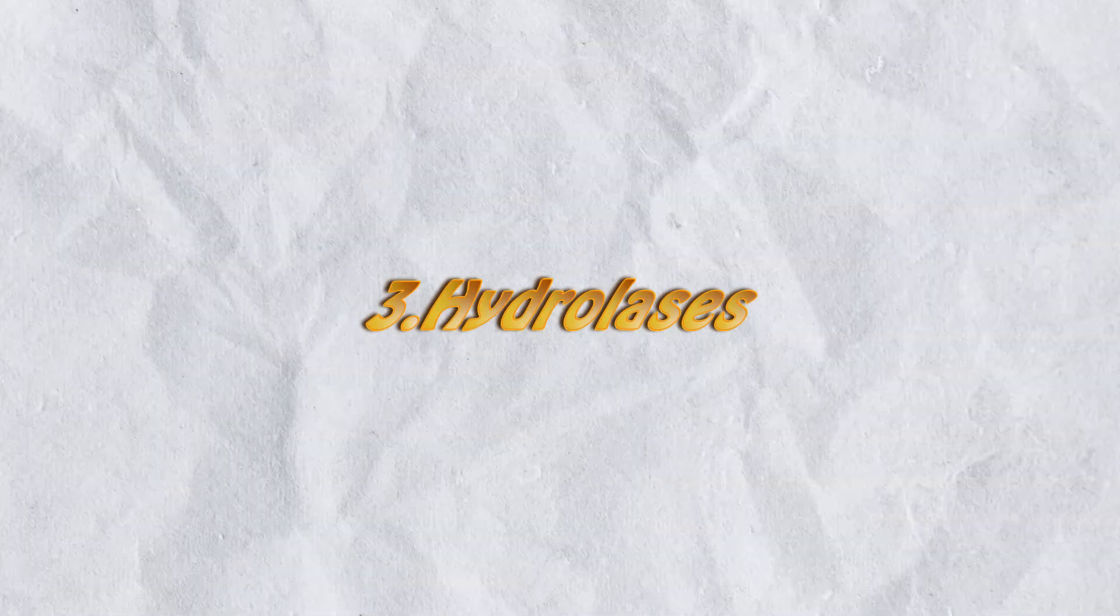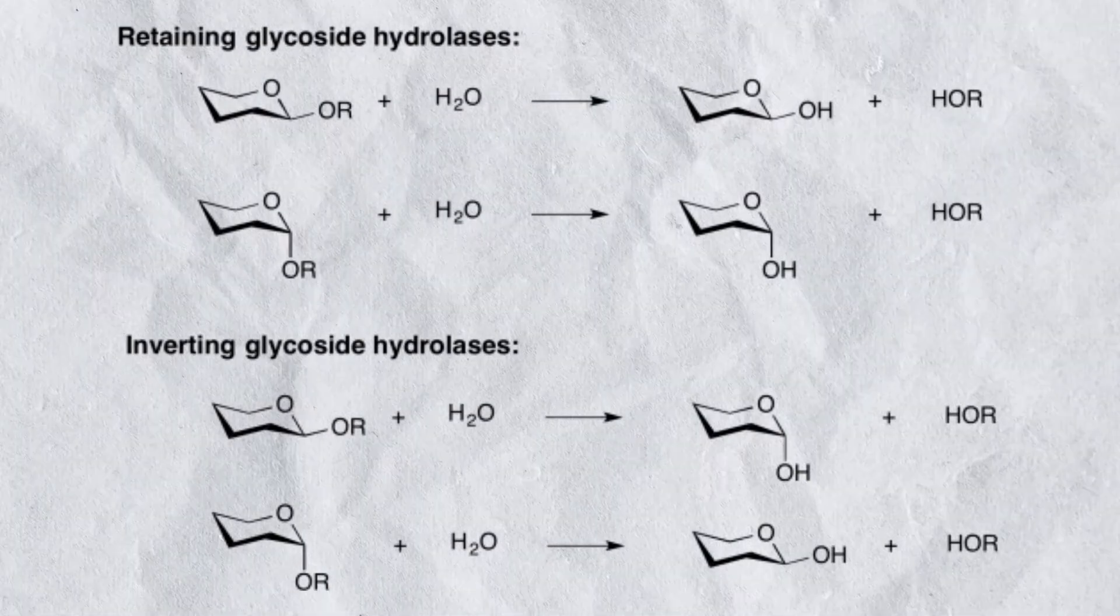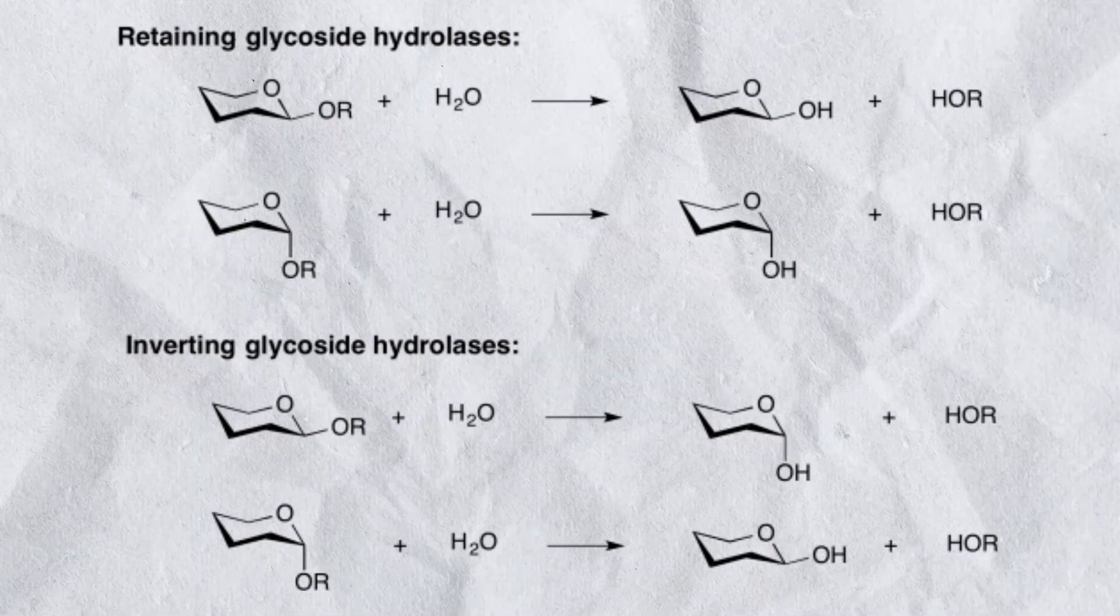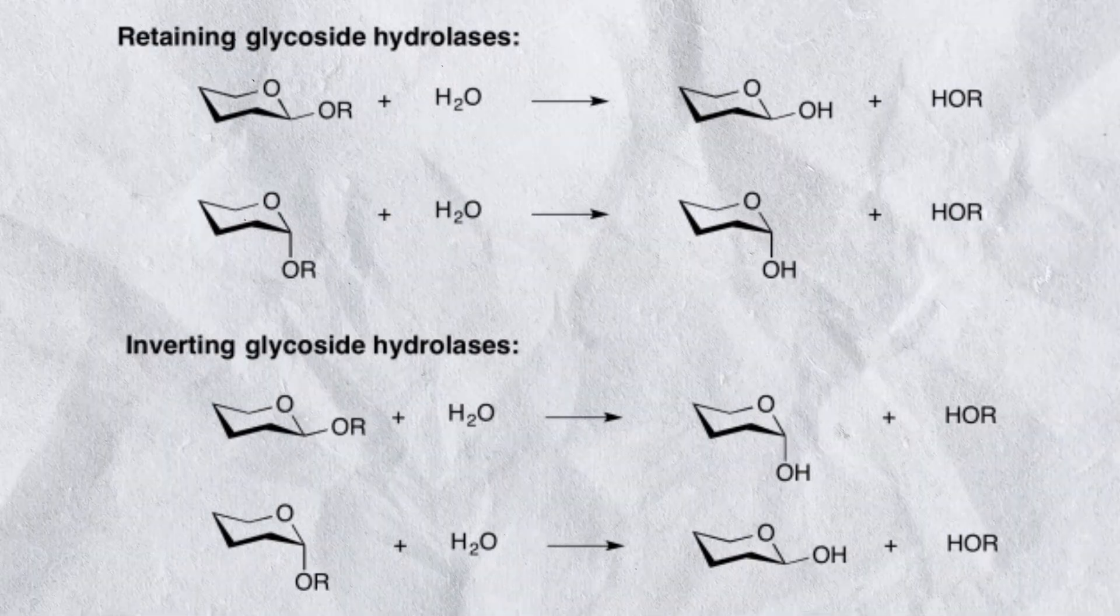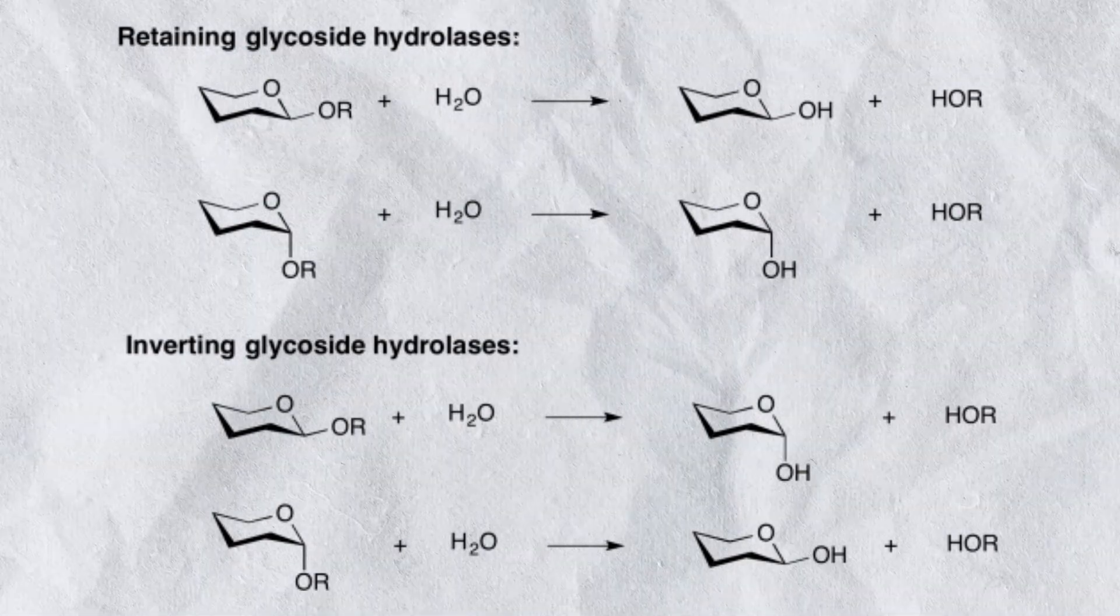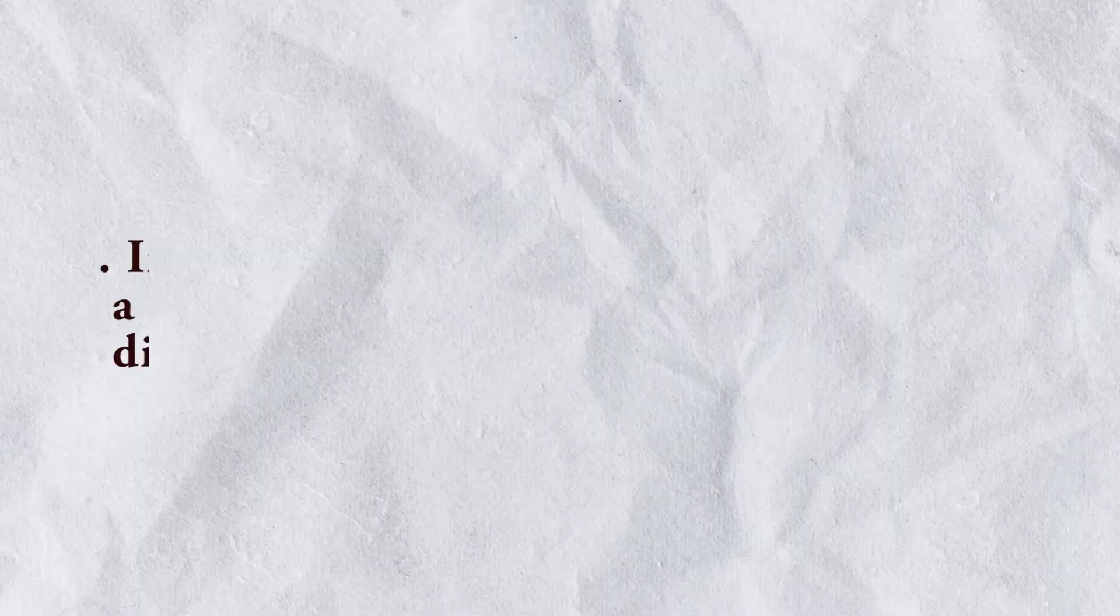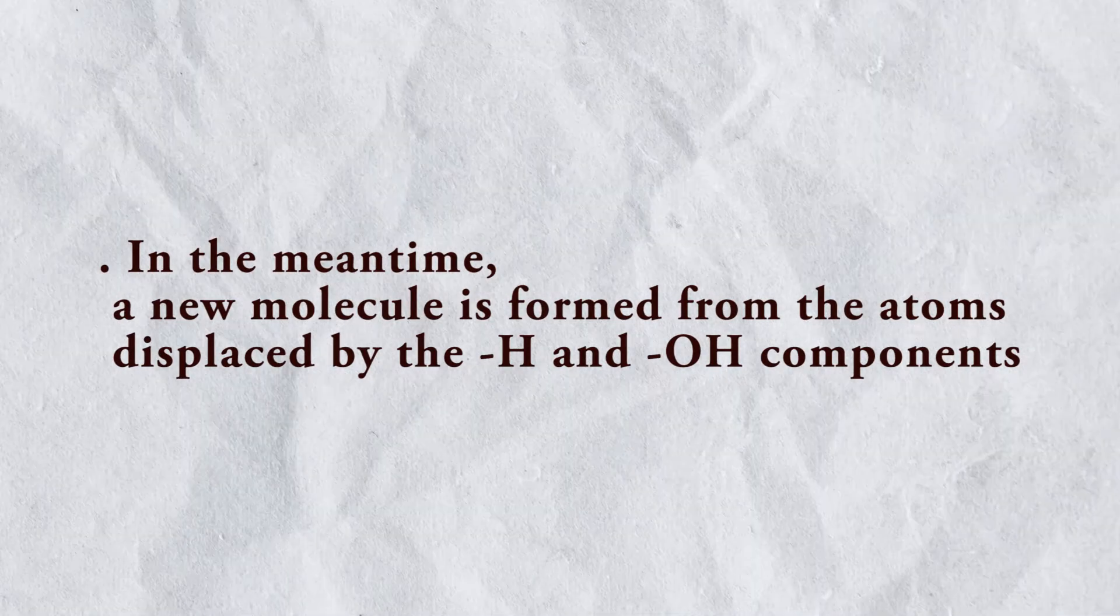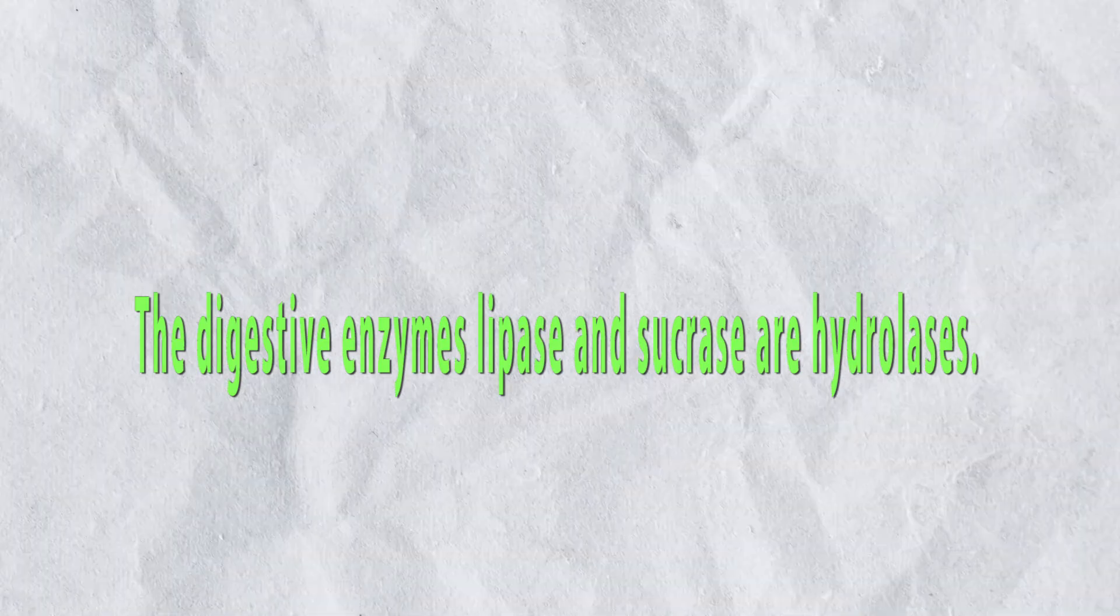Type number three: Hydrolases. Accelerate hydrolysis reactions. Hydrolysis reactions use water to split a bond in a molecule to create two daughter products, usually by attaching the OH hydroxide group from the water to one of the products and the single hydrogen atom to the other. In the meantime, a new molecule is formed from the atoms displaced by hydrogen and hydroxyl components. The digestive enzymes lipase and saccharidases are examples.